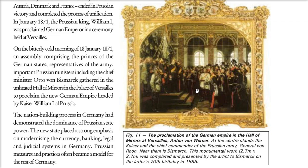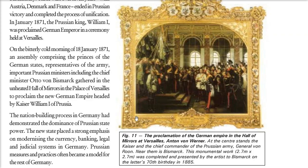This nation building of Germany showed Prussian dominance. The new state placed strong emphasis on the modernization of the currency, banking, legal, and judicial system. This Prussian model became the practice and measures for the rest of Germany.